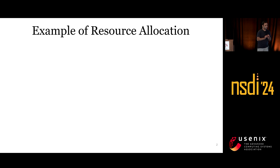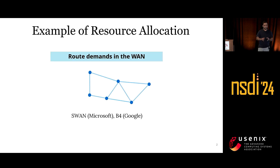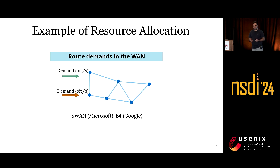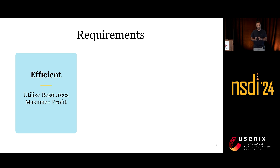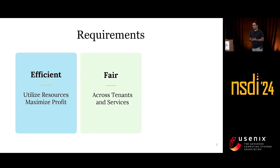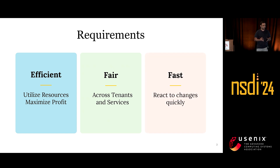Resource allocation plays a critical role in many domains. Here you can see an abstract wide-area network that connects different users. These users have some demands and want to send traffic at a specific rate toward the destination. The goal of the resource allocator is to find a way to effectively route these demands. By effective, I mean they need to meet three key requirements: efficiently utilize all available resources to maximize profit, be fair to different customers and tenants, and be fast so it can react quickly to changes in the network and demands.